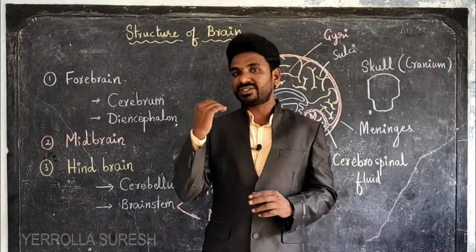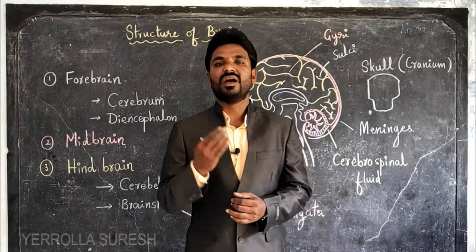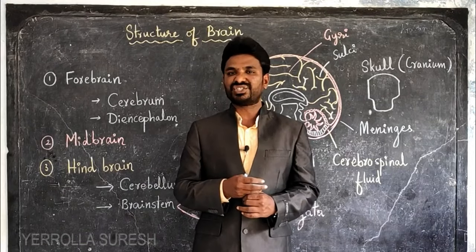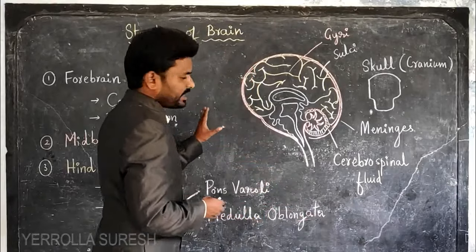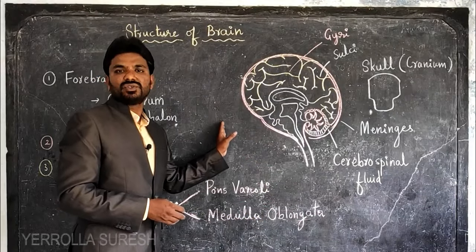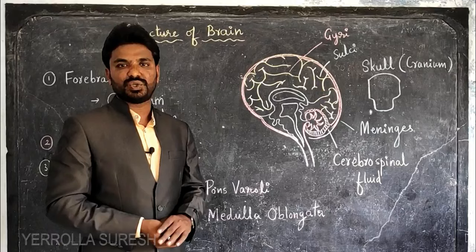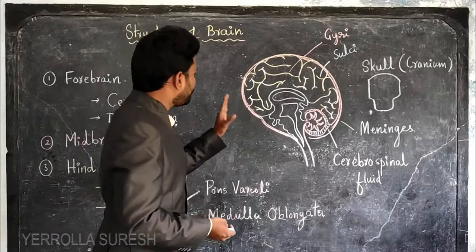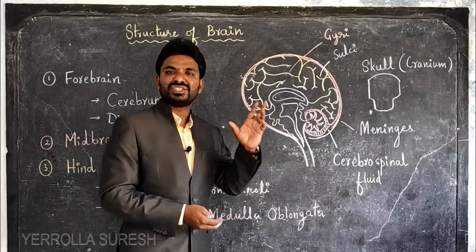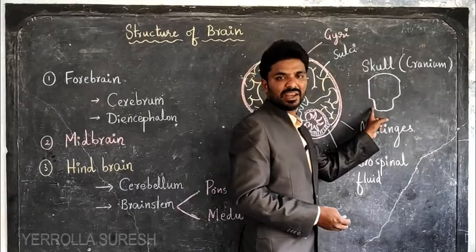In this session let's concentrate on the structure of the brain and how it involves different functions. The brain is made of so many nerve cells — it is made of nervous tissue. The brain is located inside a bony box-like structure called the skull.